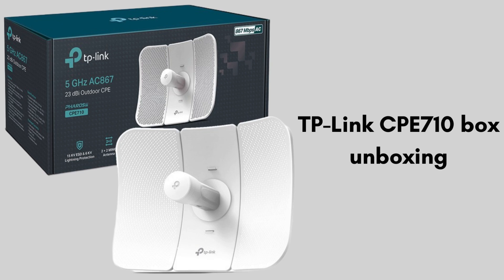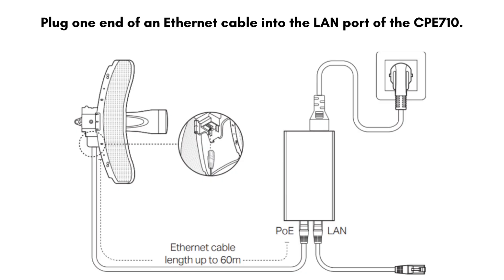So let's start the setup process. Plug one end of an ethernet cable into the LAN port of the CPE 710. Connect the other end of the cable to the PoE port on the PoE adapter.